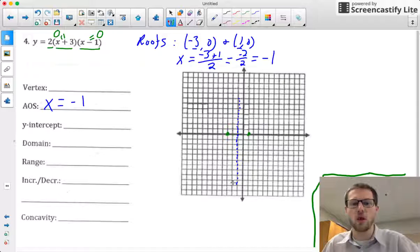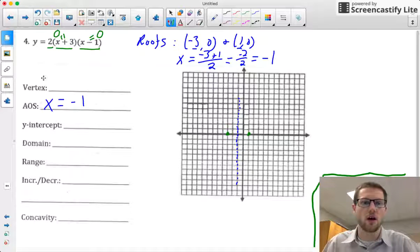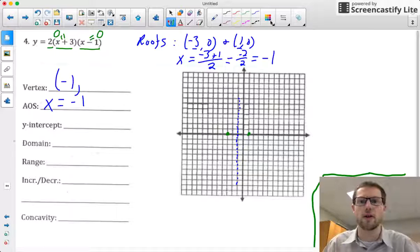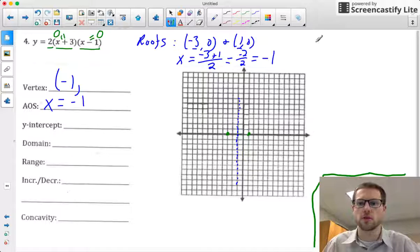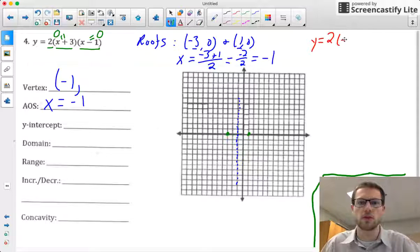So once I have this -1, I know that my vertex is somewhere on this line. All I know so far is that my vertex has -1 as the x-coordinate. To find the y-coordinate, let's plug in -1 for x. So let's do that over here: y = 2(-1 + 3)(-1 - 1).